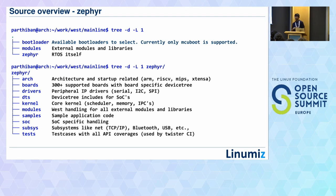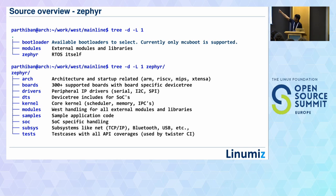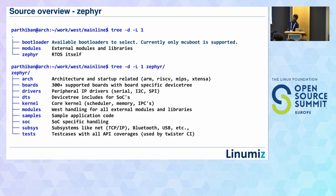Before going into what you can contribute, let's have a brief overview of the directory structure. What we have in Zephyr — it's not just the RTOS itself; it is distributed across multiple source control systems. The first thing is the bootloader, where Zephyr currently supports one upstream bootloader: the MCUboot. Under bootloader is the directory structure, and then you have modules, which we'll speak about next, and the Zephyr RTOS itself.